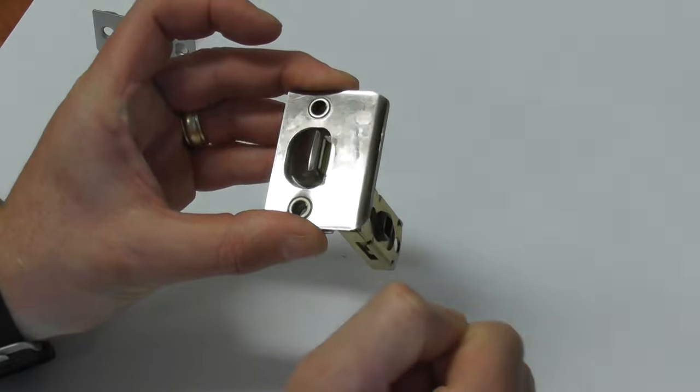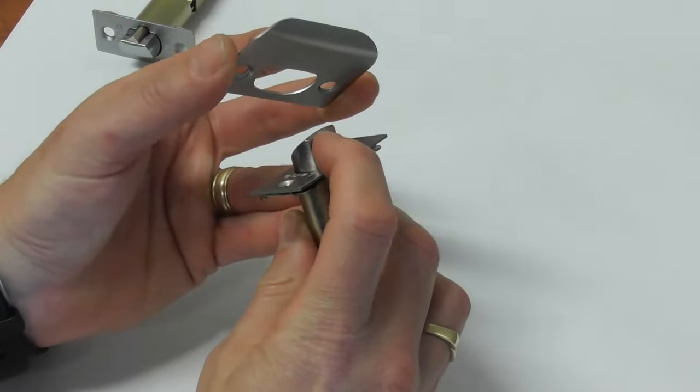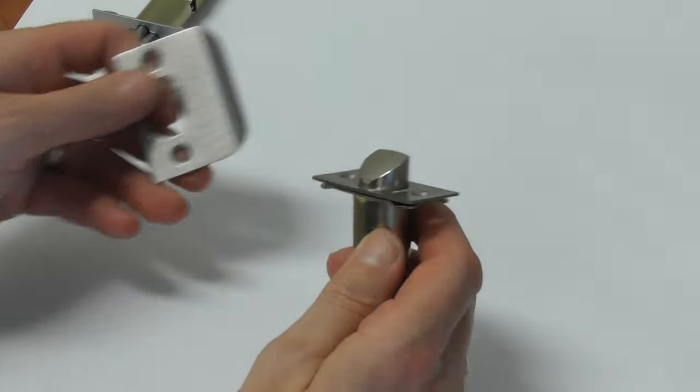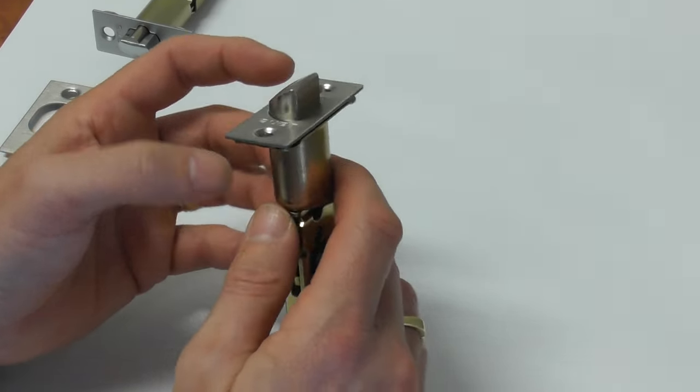When it lines up with the hole, the spring-loaded surface pops back out. And then because you've got a flat area here, you can't open the door until you activate it with the knob set or the lever set. A latch is as simple as that.